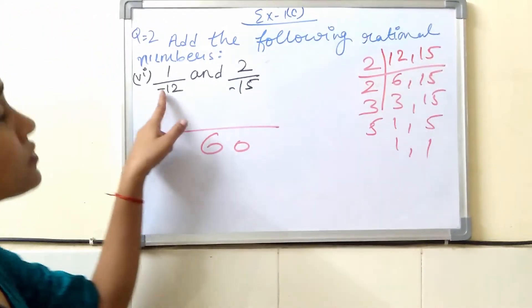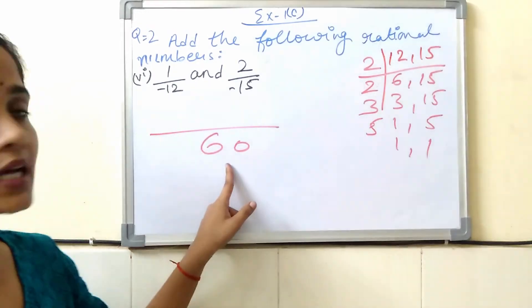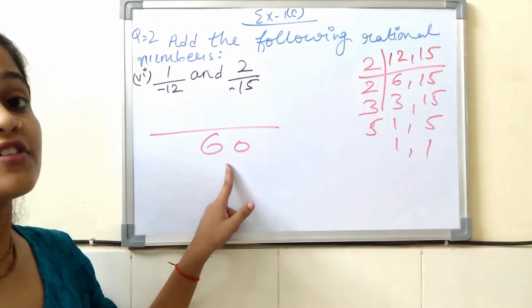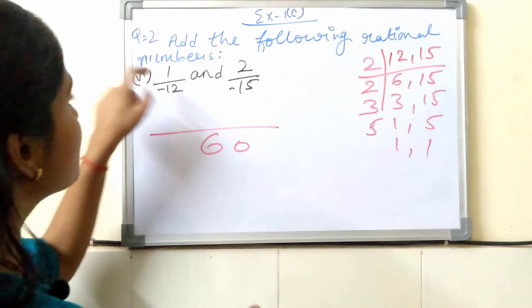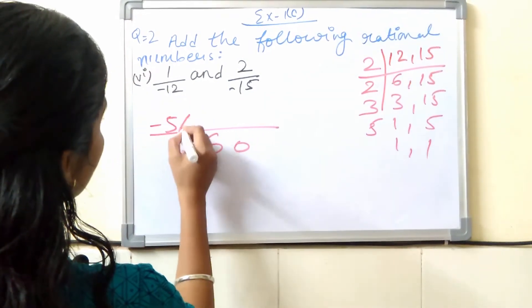So, in minus 12, how many times will 60 go? Minus 5 times. So, minus 5 into 1, how much will it be? Minus 5 into 1. We are just writing here.